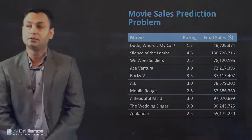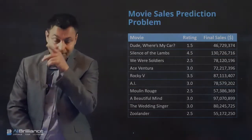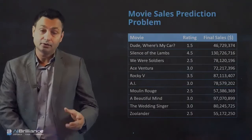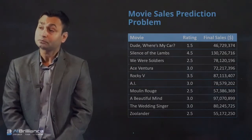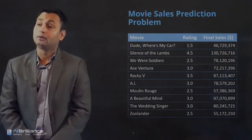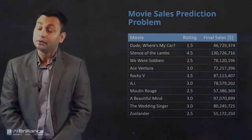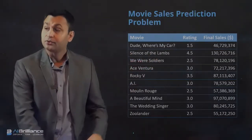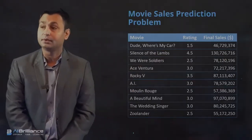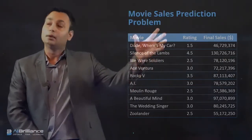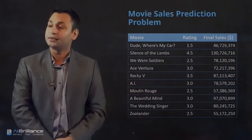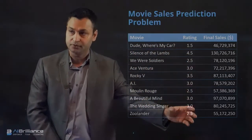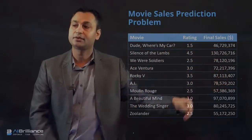To motivate this, let's take an example also shown in the linear regression class. We have a dataset where we have movies, ratings for the movies, and also final sales with respect to those movies.